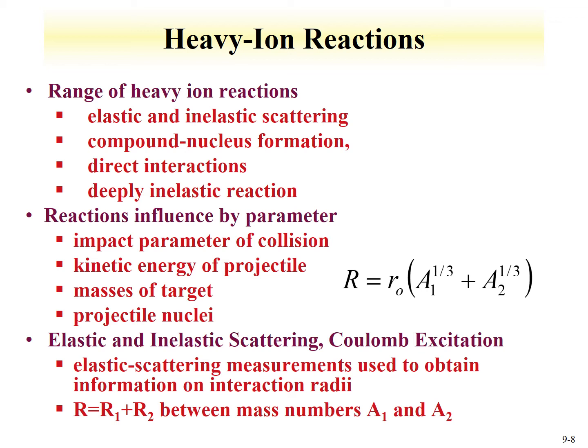Moving from lighter to heavier particles: instead of using a proton, consider bombarding a nucleus with something like oxygen-16 — these are heavy ion reactions. Heavy ion reactions are in many ways similar to light ion reactions, with elastic and inelastic scattering, compound nucleus formation, direct interactions, and deeply inelastic reactions. One main difference is that the heavy ion can donate some of its nuclear matter to the reaction, whereas a proton is either all or nothing.